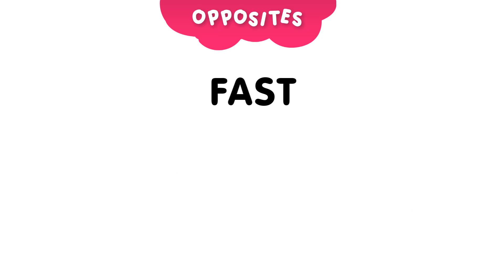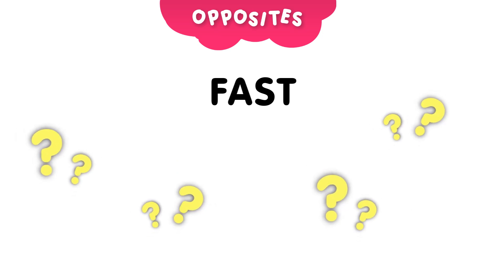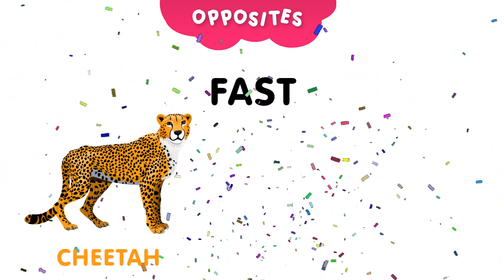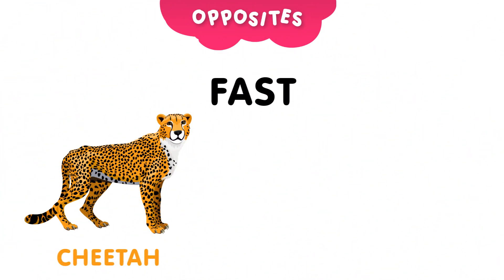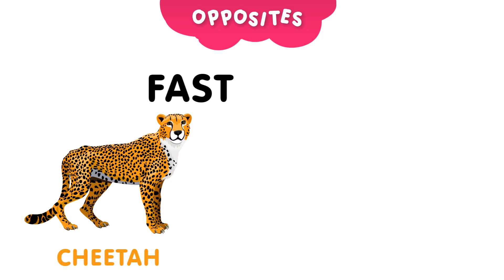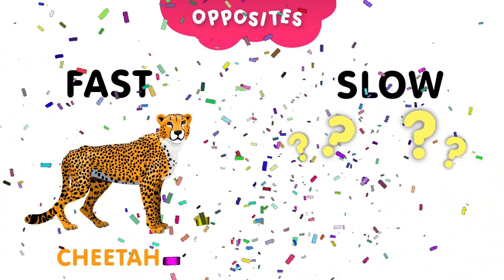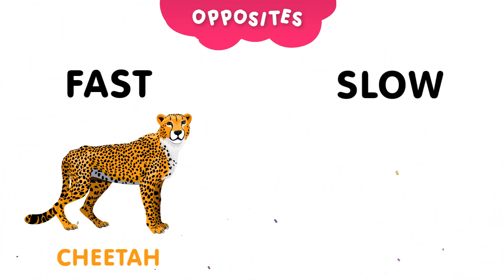Next, we have the word fast. Can you guess which animal is fast? And the answer is, the cheetah. Cheetahs are the fastest animals in the world. Now, can you guess the opposite of fast? Take 5 seconds to think about it. And the answer is, slow.